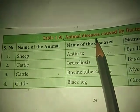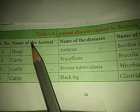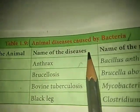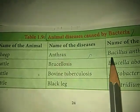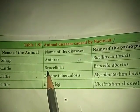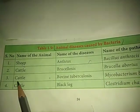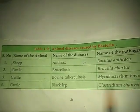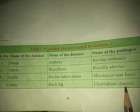Animal diseases caused by bacteria — given in table. Host — sheep, disease — anthrax, pathogen — Bacillus anthracis. Host — cattle, disease — brucellosis, pathogen — Brucella abortus. Host — cattle, disease — bovine tuberculosis, pathogen — Mycobacterium bovis. Host — cattle, disease — black leg, pathogen — Clostridium chauvoei.